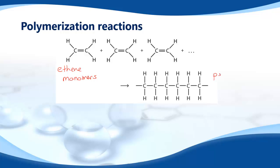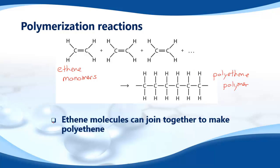This example here is polyethene, or polythene, that's called a polymer. So ethene molecules can join together to make polyethene. Ethene is the monomer, and polyethene is the polymer, and they are called polymerization reactions.